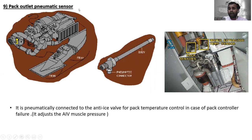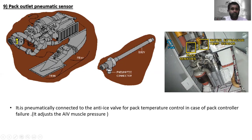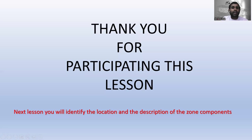The next one is the pack outlet pneumatic sensor. You can see its location here — this is the pneumatic connector and the body. It is pneumatically connected to the anti-ice valve for pack temperature control in case of pack control failure. It adjusts the anti-ice valve muscle pressure.